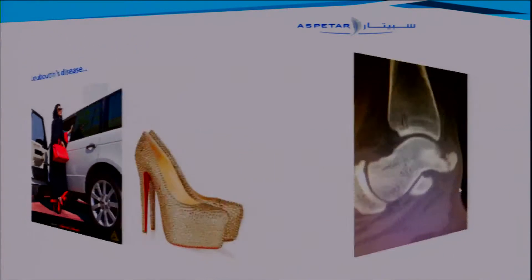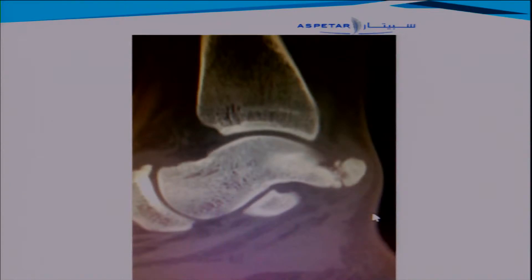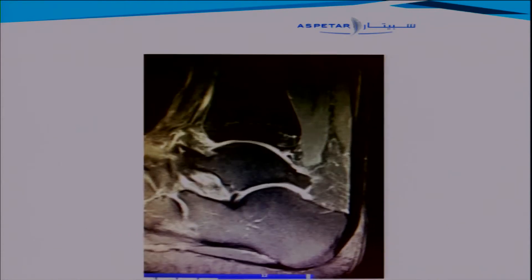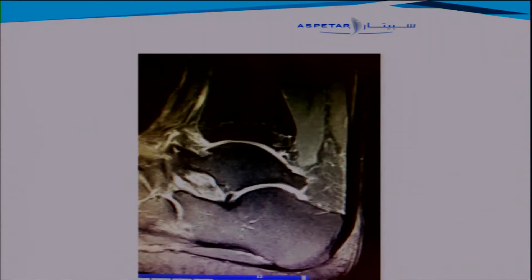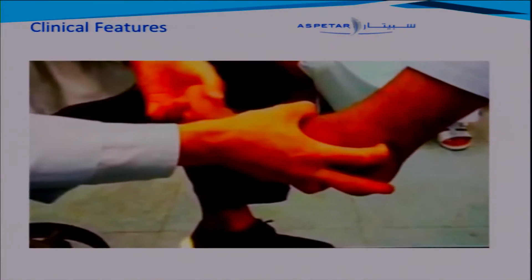When we talk about os trigonum, it's considered as a fragment on the posterior part that can impinge during plantar flexion with the distal part of the tibia. You can have it as an os trigonum or as a hypertrophic talar process. This is how it looks like clinically.